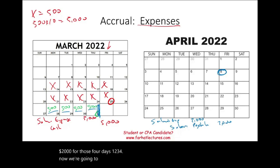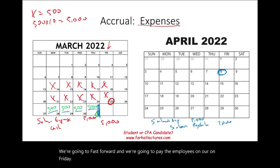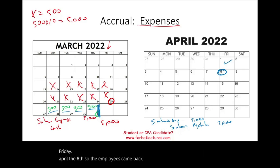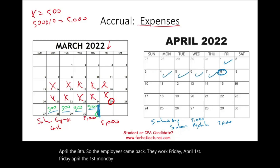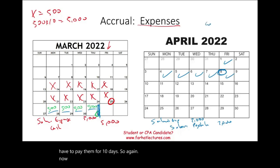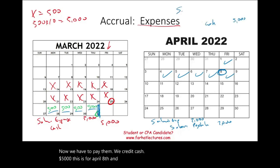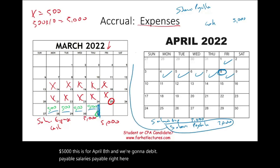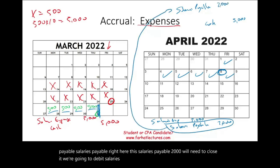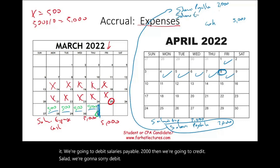We fast-forward and pay the employees on Friday, April 8th. The employees came back and worked Friday April 1st, Monday, Tuesday, Wednesday, Thursday, and Friday — so we have to pay them for 10 days. We credit cash $5,000 for April 8th. And we debit salaries payable $2,000 to close it out, then we debit salaries expense for the remaining days.